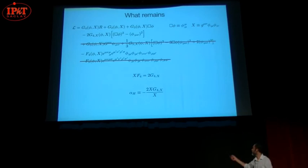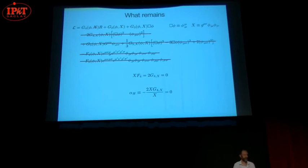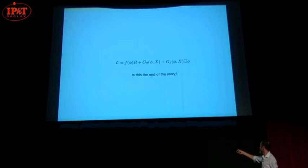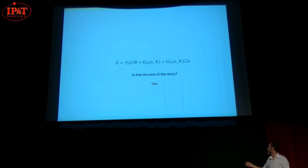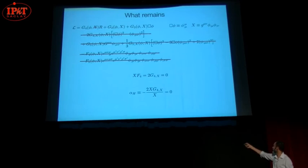Going back to the covariant Lagrangian: we are setting alpha-H to zero, eliminating G3 and G5 terms, and the remaining function G4 can only depend on the scalar field value, not on X. So the answer to whether the simplest model is the end of the story is: yes — gravitational wave propagation does not allow these complicated higher-order Lagrangians.